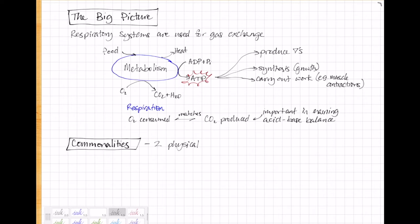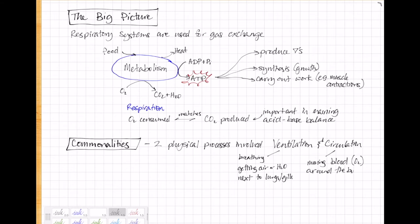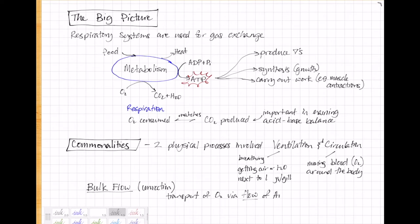No matter what kind of respiratory system you have, there are two physical processes involved in ventilation and circulation. By ventilation, we mean breathing or getting air or water next to the gill or lung surface. And by circulation, we mean moving blood, in this case carrying oxygen, around the body. These two processes are bulk flow, a.k.a. convection, which moves oxygen via flow of the media that it's dissolved in, whether it's air, water, or blood. And our old friend, diffusion, which is movement of oxygen by random motions, or Brownian motion.